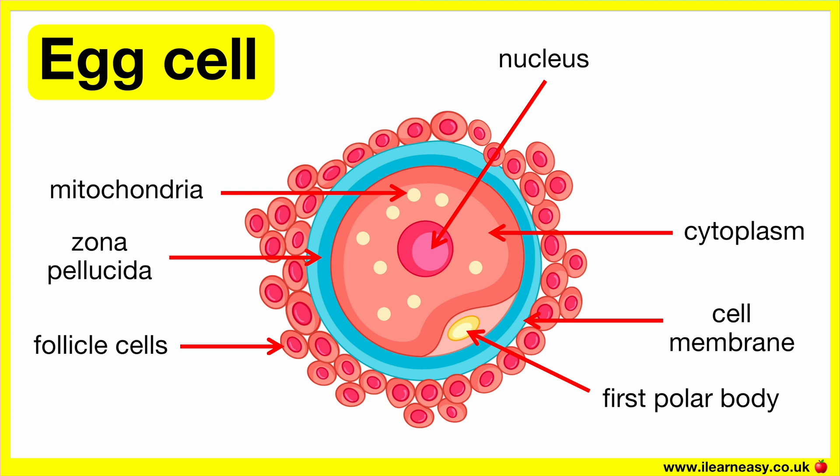The haploid nucleus contains genetic material for fertilisation. The egg cell cytoplasm contains nutrients. These nutrients are required for the growth of the early embryo. The cell membrane regulates the exchange of substances, protects the cell, and facilitates fertilisation by interacting with the sperm.